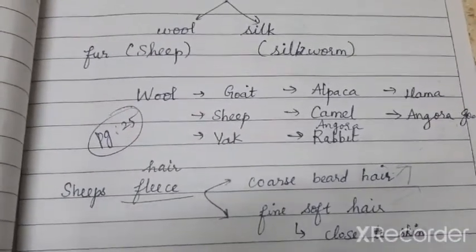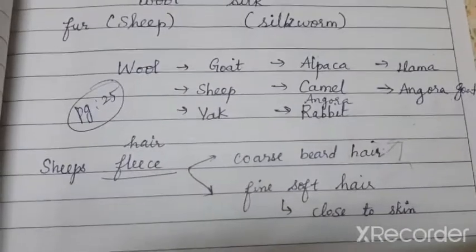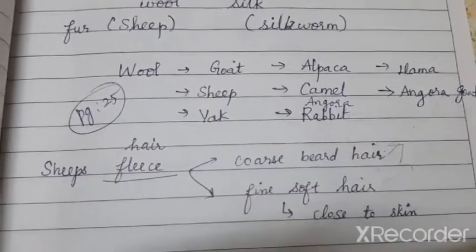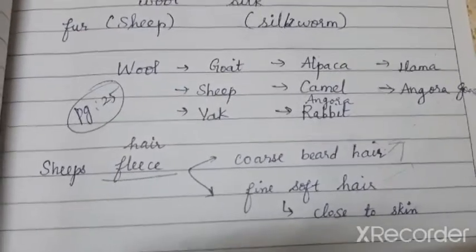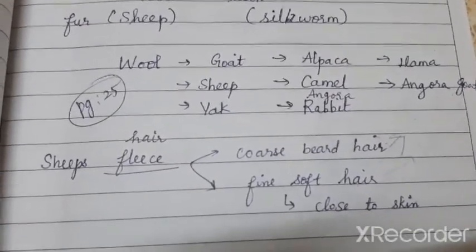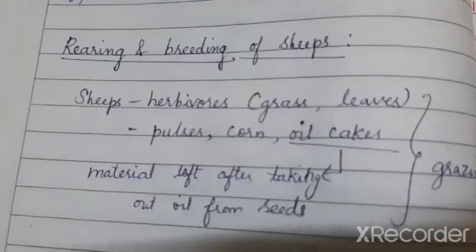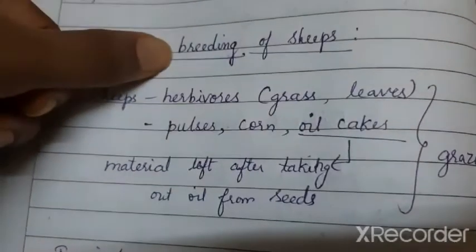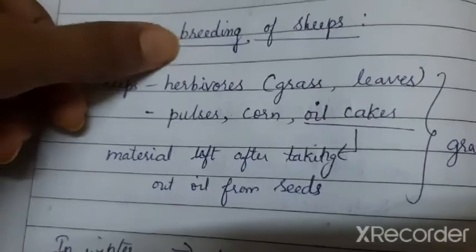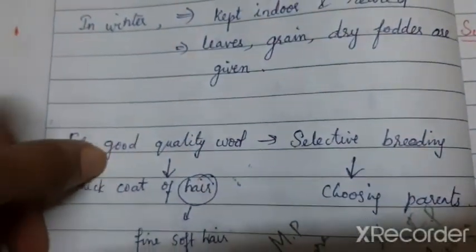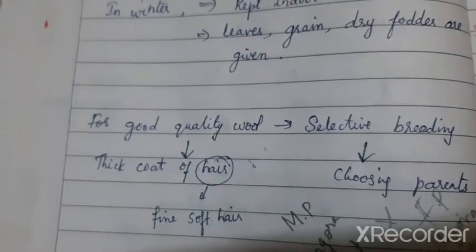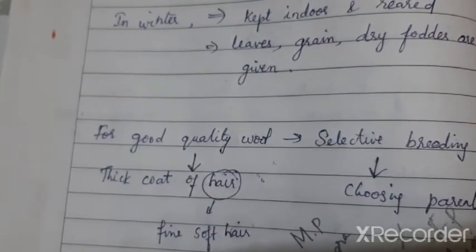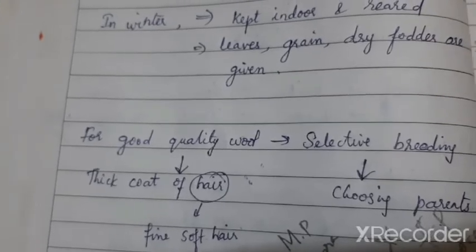So what did we see today? We saw how wool is obtained from animals, the various animals that give us wool, the texture and types of their hair, and how these animals are reared and bred. Breeding involves choosing parents — that process is called selective breeding — to choose parents based on the demand for wool. I will stop here. If you have any doubt you can contact me. Let us continue in the next class. Thank you.